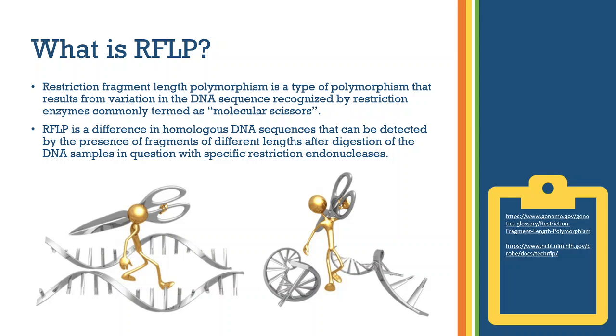RFLP is a difference in homologous DNA sequence that can be detected by presence of fragments of different lengths after digestion of DNA samples with specific restriction endonucleases. Restriction endonucleases are bacterial enzymes commonly used by scientists to cut DNA molecules at known locations. RFLPs are used as markers on genetic maps. It is used for analysis of unique patterns in DNA fragments in order to genetically differentiate between organisms.